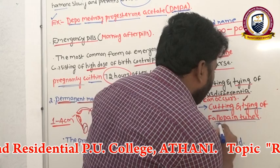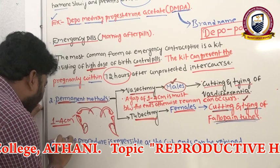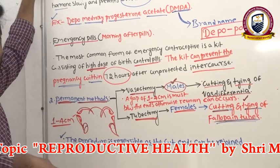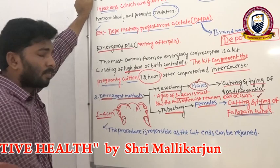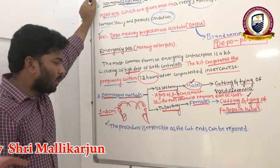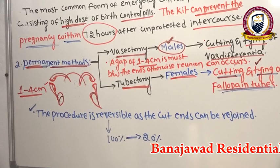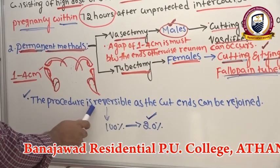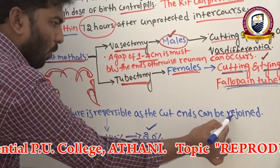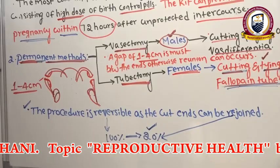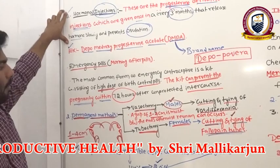Currently, vasectomy and tubectomy are considered irreversible processes. However, scientists are experimenting with rejoining the vas deferens and fallopian tubes. The success rate is very low — only about 20 percent of cases are successfully reversible.